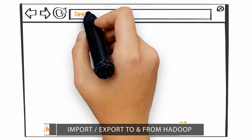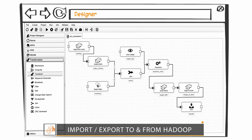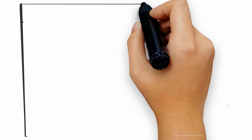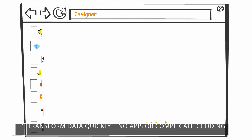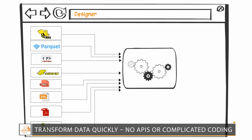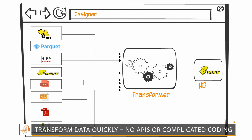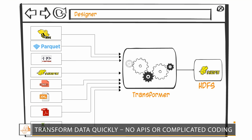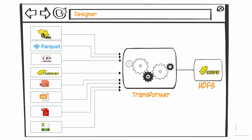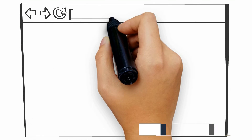H-Trunk provides a set of connector components to move data in and out of Hadoop from all major systems in the industry. H-Trunk's pre-built components can use the data from any Hadoop ecosystem component like Hive, HDFS files, HBase, Parquet, or from CSV, text, XML, or PDF files, and transform them all in one flow without having to understand the API or write the complicated code required to implement business logic.